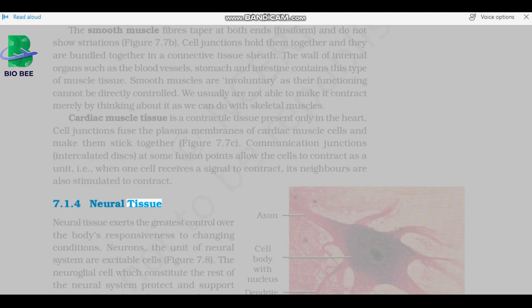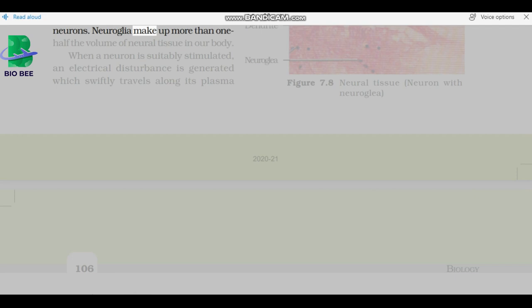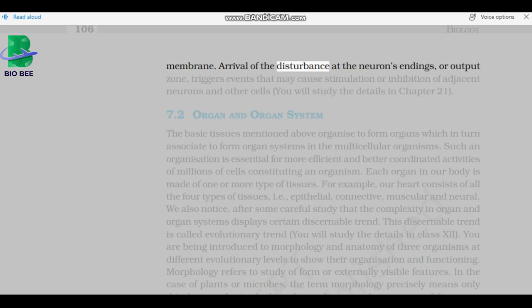Neural tissue exerts the greatest control over the body's responsiveness to changing conditions. Neurons, the unit of neural system, are excitable cells. The neuroglial cells which constitute the rest of the neural system protect and support neurons. Neuroglia make up more than one-half the volume of neural tissue in our body. When a neuron is suitably stimulated, an electrical disturbance is generated which swiftly travels along its plasma membrane. Arrival of the disturbance at the neuron's endings, or output zone, triggers events that may cause stimulation or inhibition of adjacent neurons and other cells.